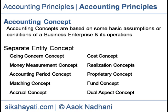Cost Concept: Under this concept, assets are shown at cost price, that is, in acquisition price. The cost price is systematically reduced by charging depreciation to reflect its reduction in value over time. Example: A building has been acquired paying Rupees 5,00,000. The building would be recorded at cost price, that is Rupees 5,00,000 in the books. If after one year its market value comes down to Rupees 4,00,000, there will be no change in acquisition or cost in the books of accounts. After charging depreciation, that is Rupees 50,000 at the rate of 10% per annum, the asset would be taken as Rupees 4,50,000 at the end of the year.